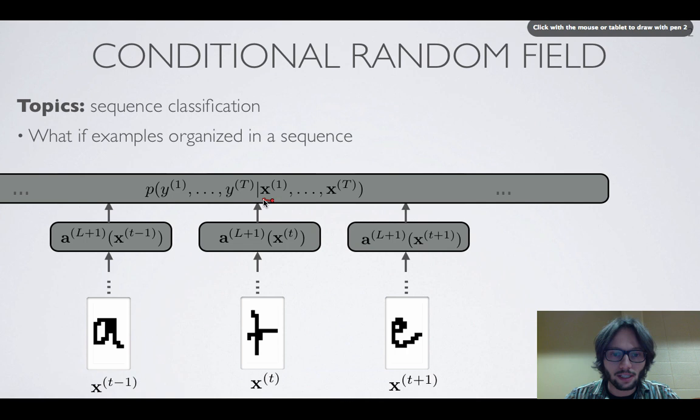...then what we would like to do is actually model the joint distribution over the whole sequence. Given the sequence of images as input, get a distribution over the sequence of labels, the sequence of classes for each character in the input.